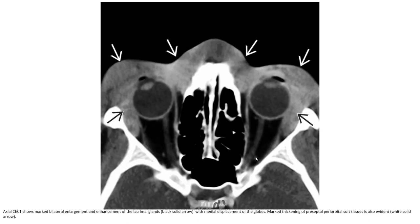This is the Axial Contrast Enhanced CT showing marked bilateral enlargement and enhancement of the lacrimal glands with major displacement of the globe. Marked thickening of the pre-septal periorbital soft tissues is also evident.